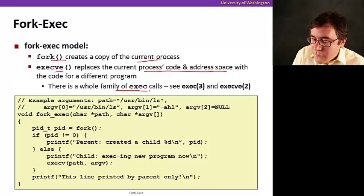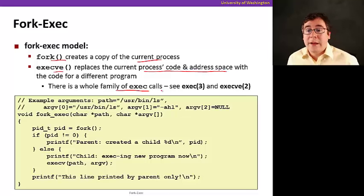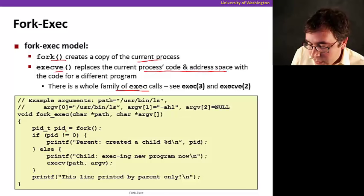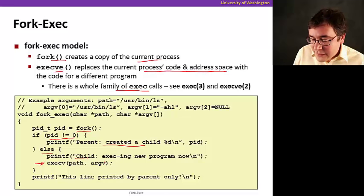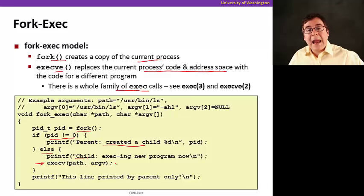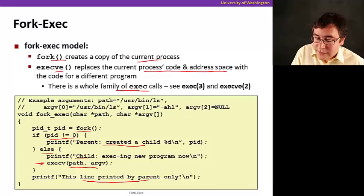In fact, there's a whole family of exec calls. I encourage you to explore them. So for example here, in this code, we are calling fork. If the PID is not zero, that's the parent. It created a child. And otherwise, if the PID is zero, that's the child. And when we call execv here, the child is going to replace its code and its data and its address space with the code and address space from a different program. And this line here is going to be printed by the parent only, because execv is not going to return.